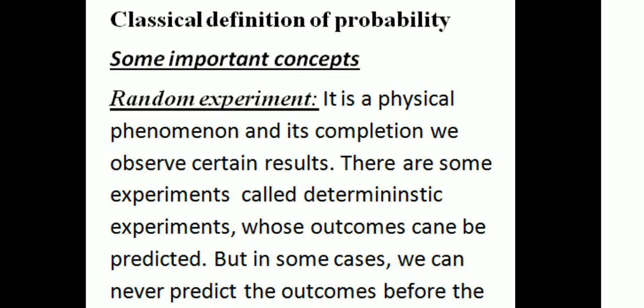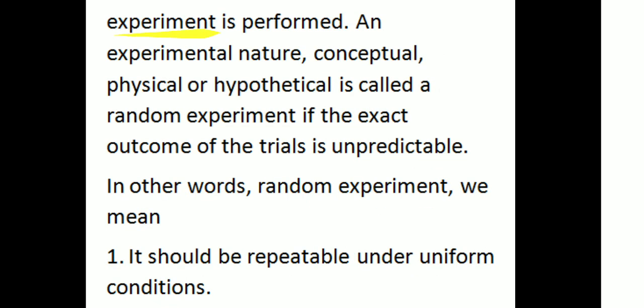Some important concepts for the classical definition of probability. First: random experiment. A random experiment is a physical phenomenon in whose completion we observe certain results. There are some experiments called deterministic experiments whose outcomes can be predicted, but in some cases we can never predict the outcome before the experiment is performed.